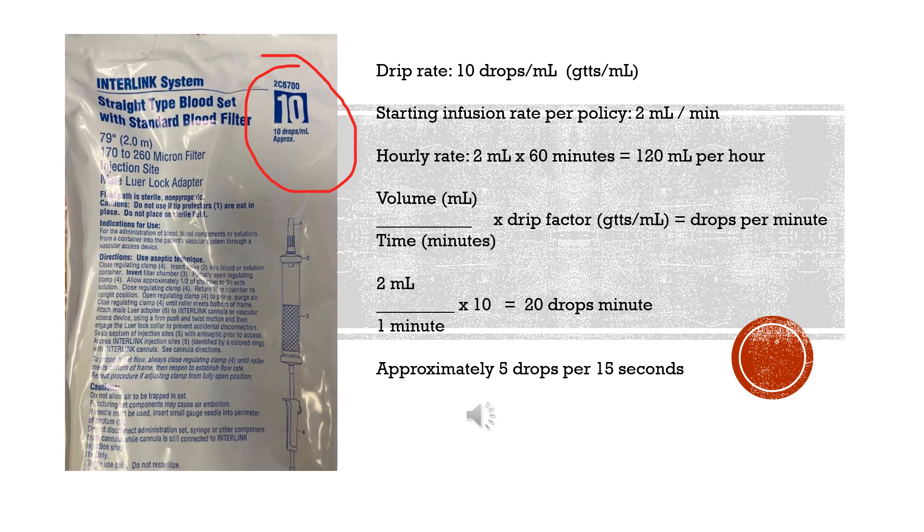So in this case, your numbers are pretty simple. For example, we are trying to calculate 2 mls divided by 1 minute times our drip factor, which is 10, is going to give us 20 drops per minute.